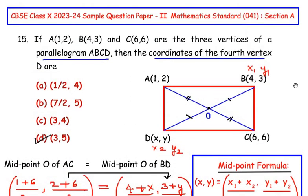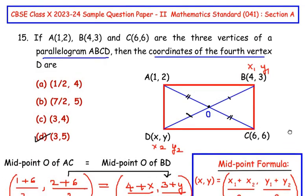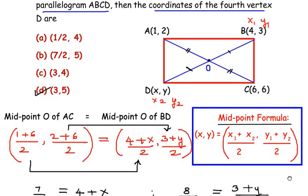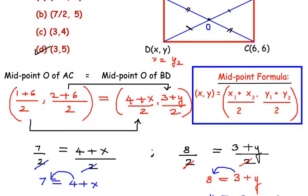So here to solve this we have made use of the property of parallelogram. That is the diagonals will bisect each other. And knowing so we equated the midpoint of the diagonal AC is equal to the midpoint of diagonal BD. And solving that we got the values of x and y coordinate of the vertex D.